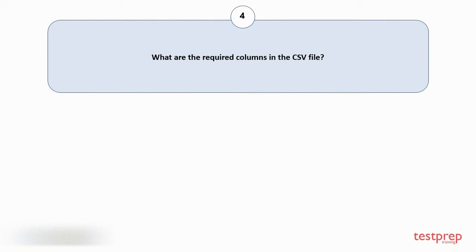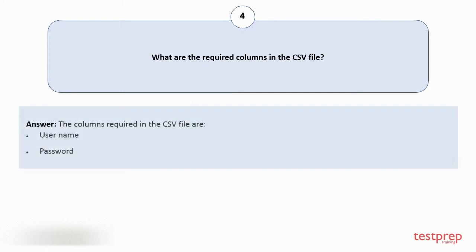Question number 4: What are the required columns in the CSV file? The columns required in the CSV file are: 1. Username. 2. Password.